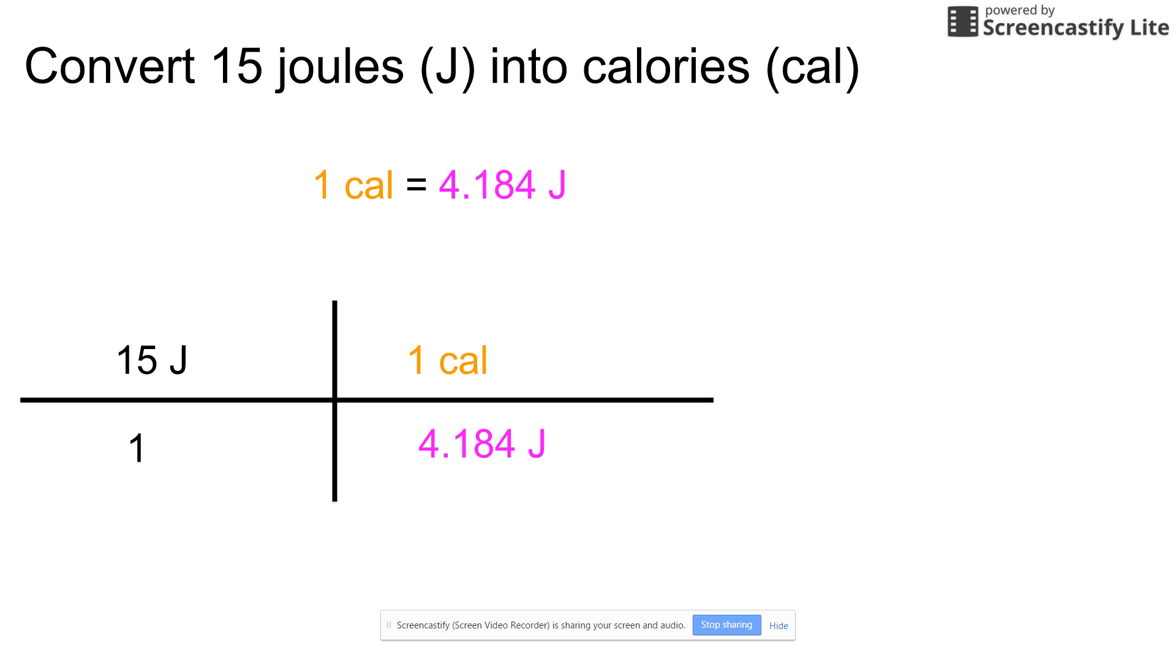Don't forget to cross off your units to make sure that your setup is correct. So you simply put 15 in your calculator divided by 4.184 and you end up with 3.6 lowercase calories.